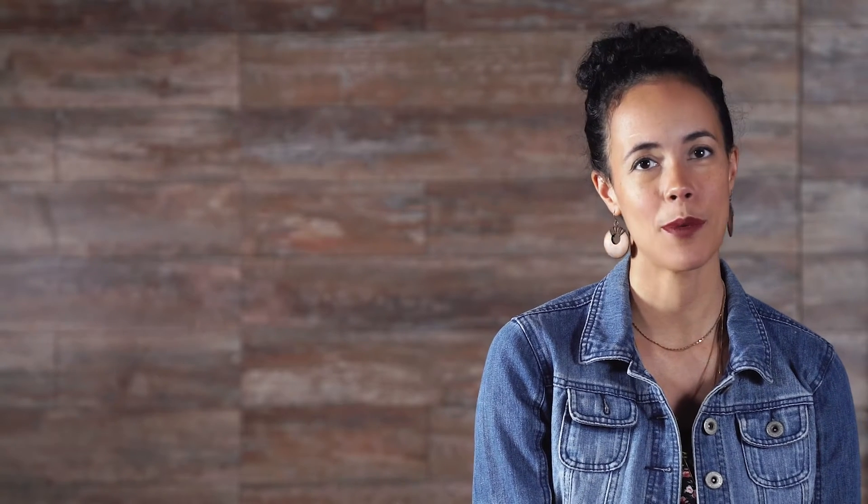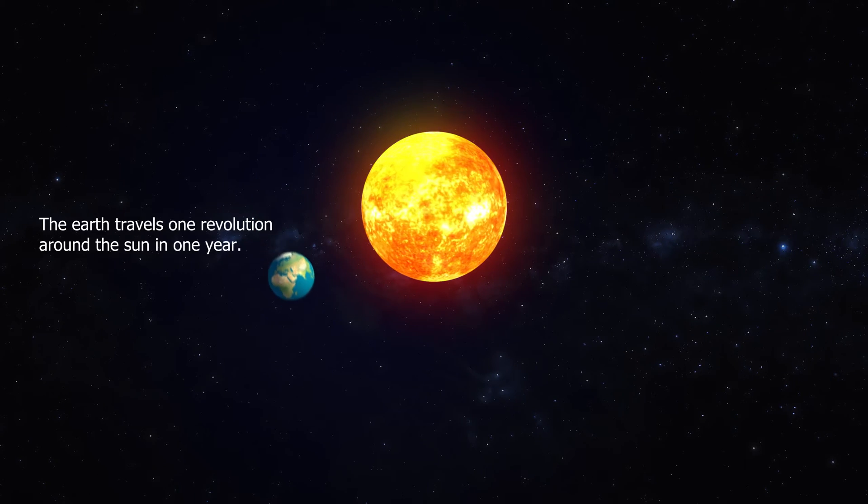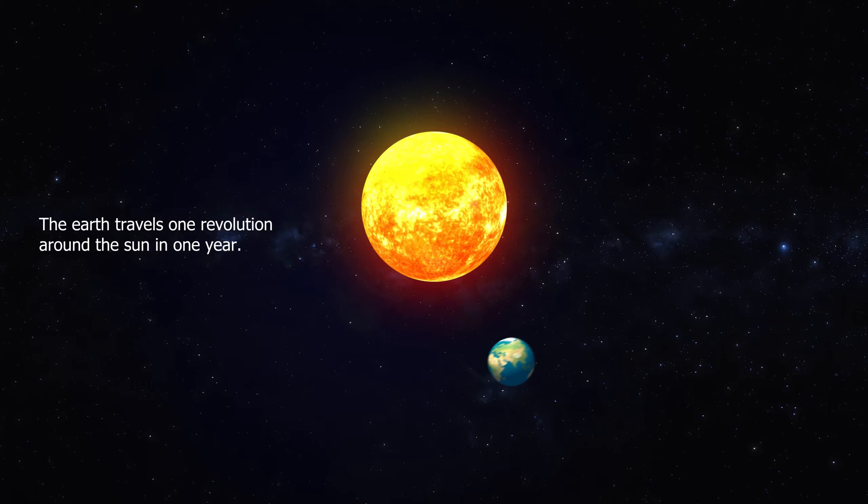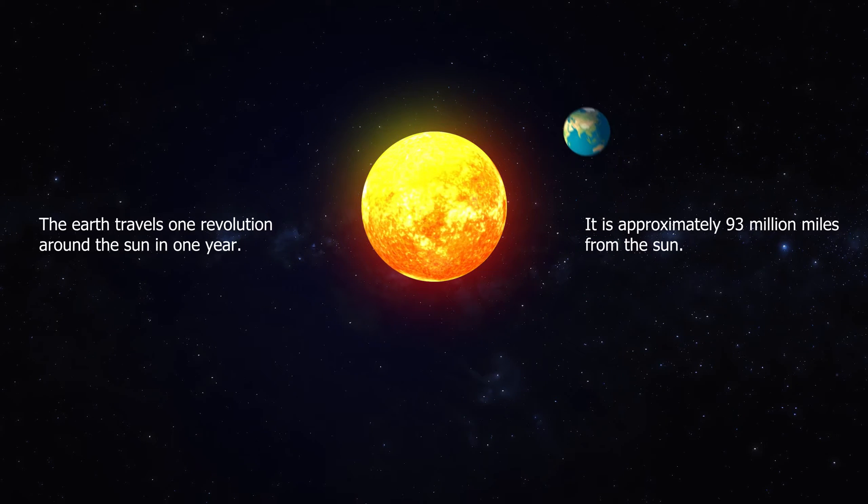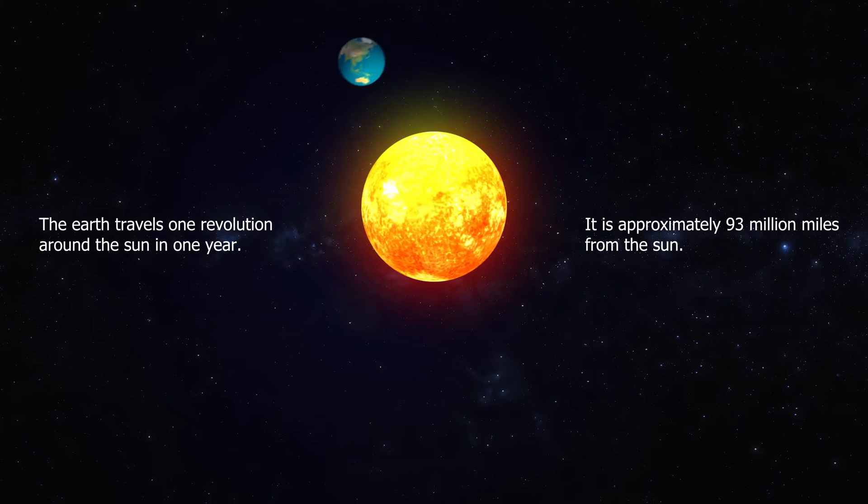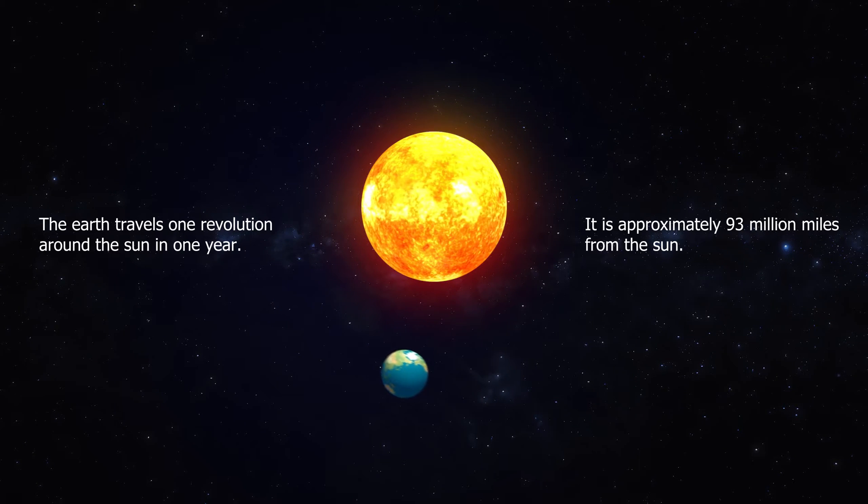Let's look at an example problem. The Earth travels one revolution around the Sun in one year. It is approximately 93 million miles from the Sun. What is the Earth's linear speed in miles per hour?